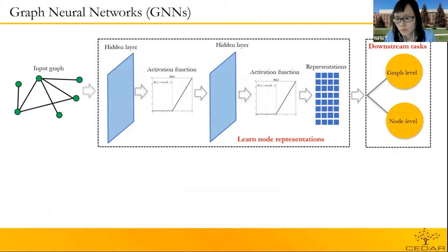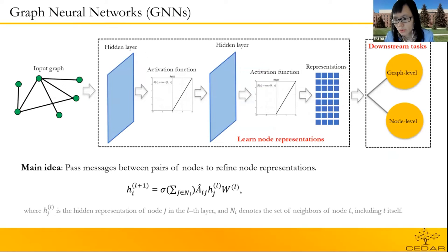This figure presents the workflow of our GNN model. The first step in GNN is to learn node representations. The main idea here is to pass messages between any pairs of nodes to refine node representations. This formula shows the update rule of node i in the L plus 1 layer. It first aggregates the features of its neighbors in the previous layer, then does the nonlinear transformation. The second step is to execute the downstream tasks on the learned node representations. It can be classification tasks on the node level or graph level. GNNs achieve remarkable classification performance in many applications, but GNNs are very vulnerable to different privacy attacks.